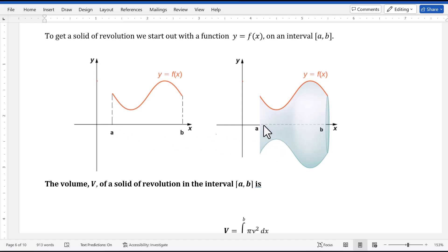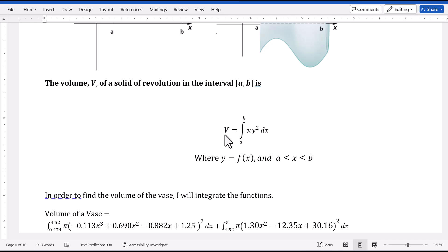Through revolution about the x-axis we got this solid. Then the volume of this solid equals the definite integral from a to b of pi y squared dx.